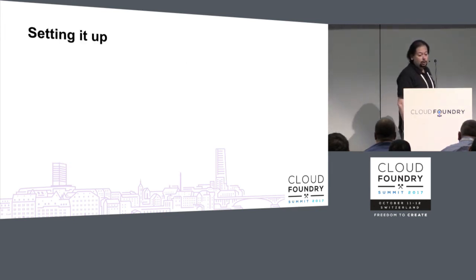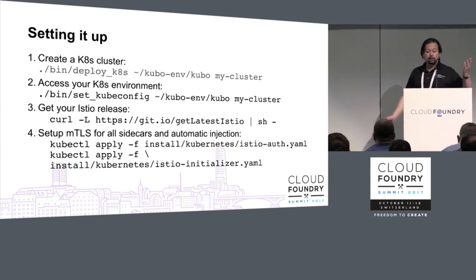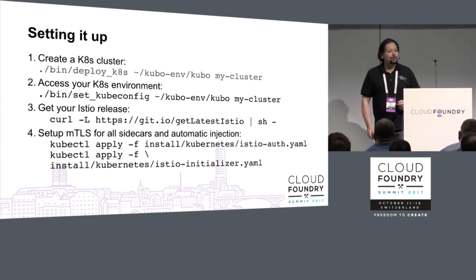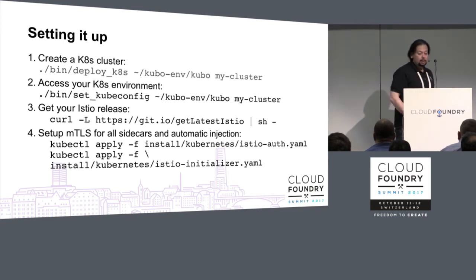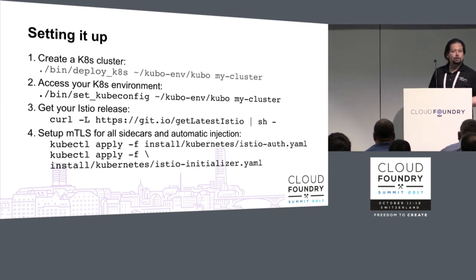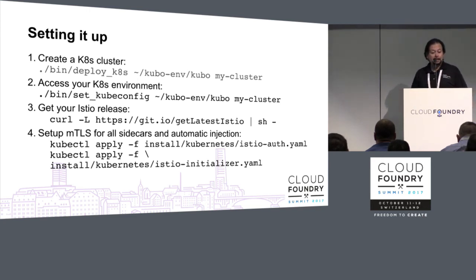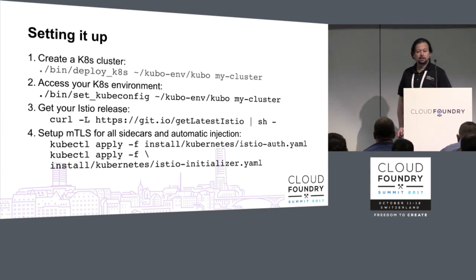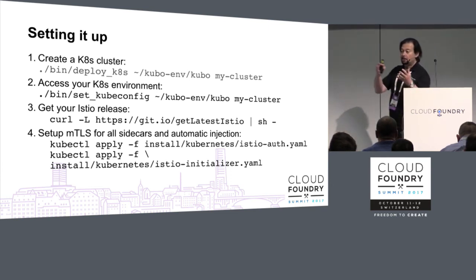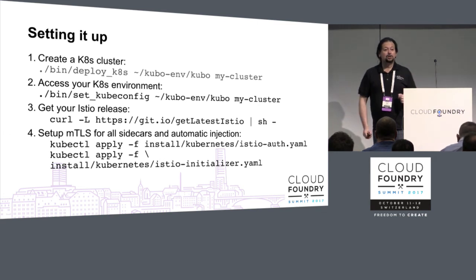This can be done today. The installation is extremely simple: deploy your Kubernetes environment, set your kubeconfig to point to your cluster, get the Istio release and it gets automatically deployed. If you choose MTLS for all sidecars with automatic injection, it all gets deployed with the Istio initializer — meaning every new app you push into the Kubernetes cluster will automatically get the sidecars inserted.